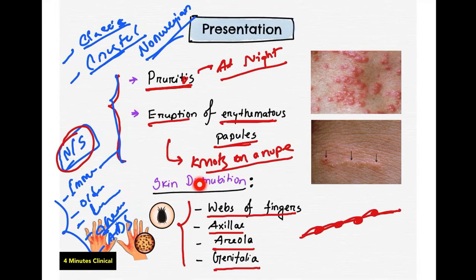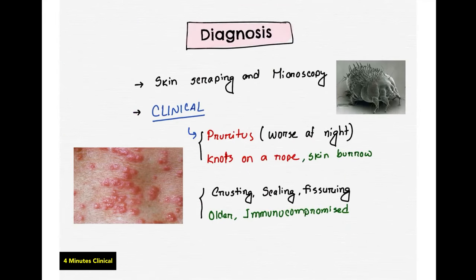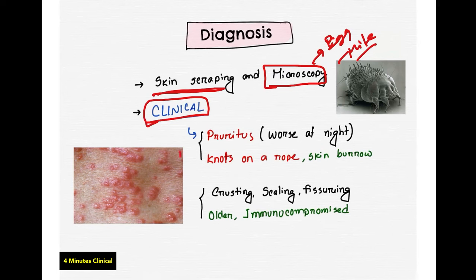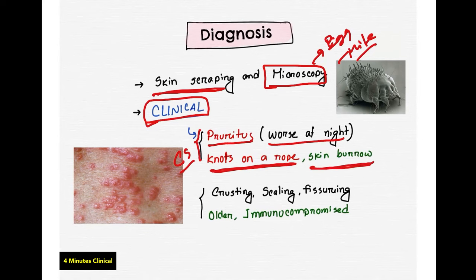Now let's talk about diagnosis. In classic scabies, the diagnosis is mainly clinical based on the presentation — pruritus, knots on a rope appearance, and skin burrows. We can also confirm under the microscope by identifying a mite or egg. In Norwegian scabies, you see crusting, scaling, and fissures, which is normally seen in older or immunocompromised patients.